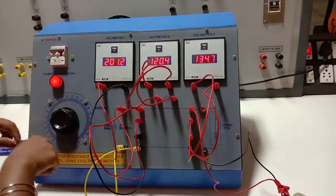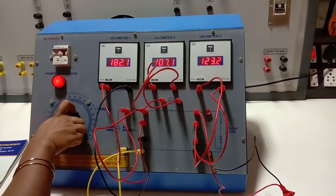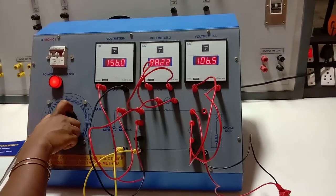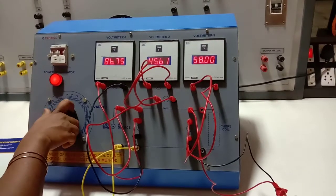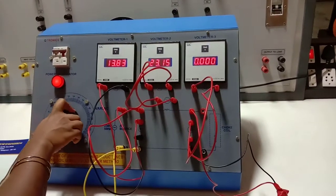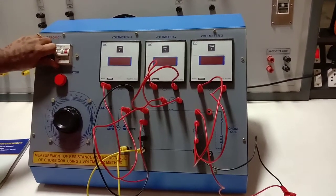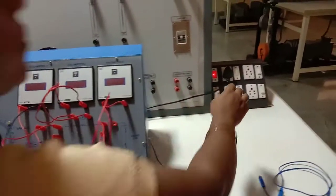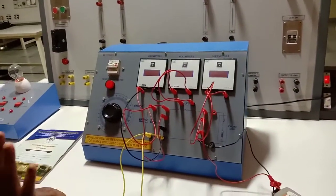Once you have done this, then you have to go back or bring back this variac to 0 position. Bring back this variac to 0 position slowly. Once it come back to 0, next switch off the MCB, then switch off the main supply. After that only you have to remove the connection.